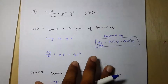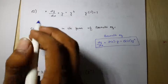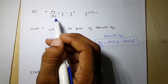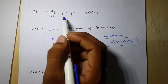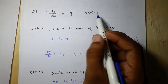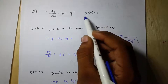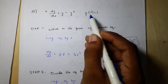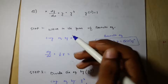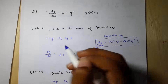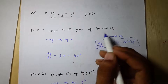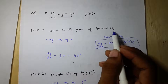Let's see our question, which is dy/dx plus y equal to y cubed, where y equals 1 and x equals minus 1. Starting from Step 1: write in the form of the Bernoulli equation.